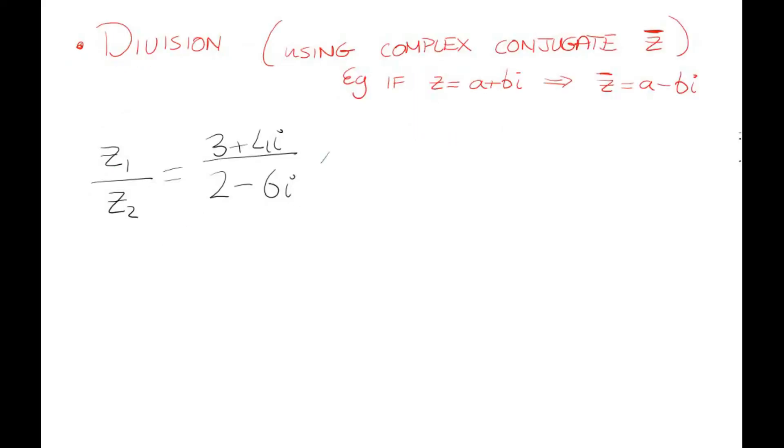For division we're going to use a technique called the complex conjugate. The complex conjugate just means that if z is some complex number a + bi, then z̄ conjugate will be a - bi. We change the sign with the imaginary part. It's important to remember that it's only with the imaginary part. Complex numbers are usually written with the real part first and imaginary part second.